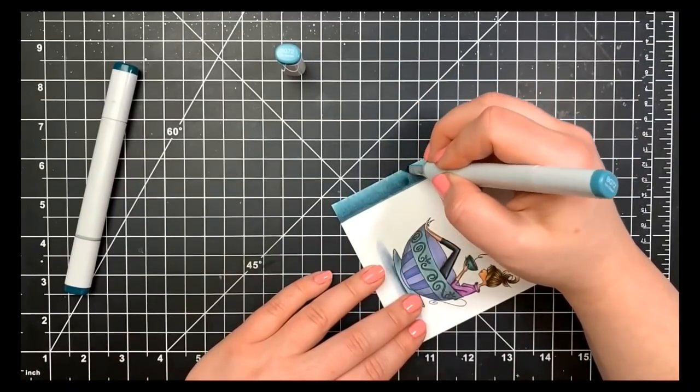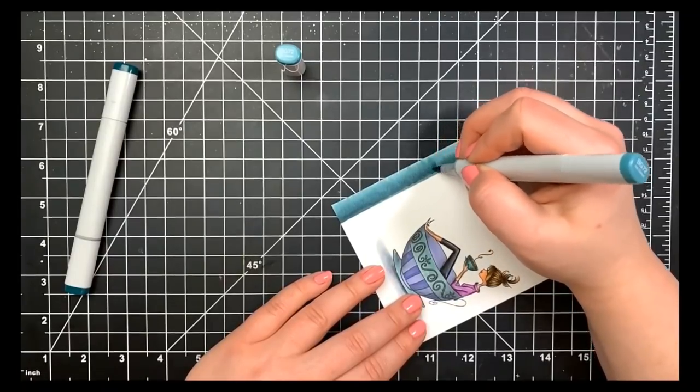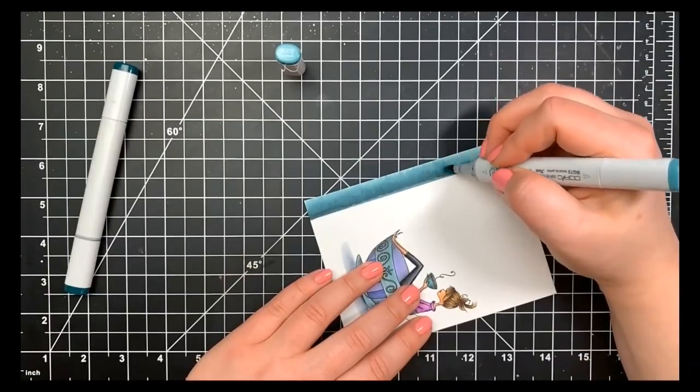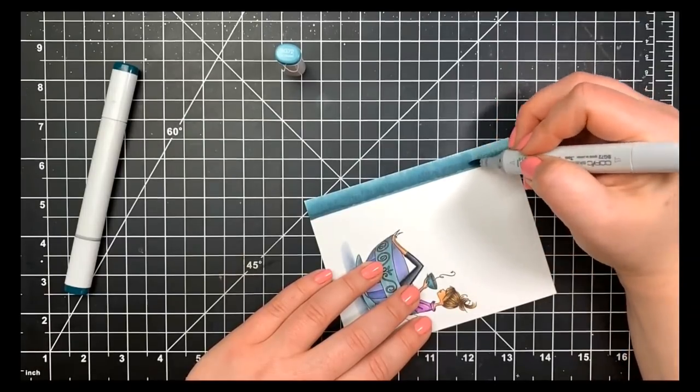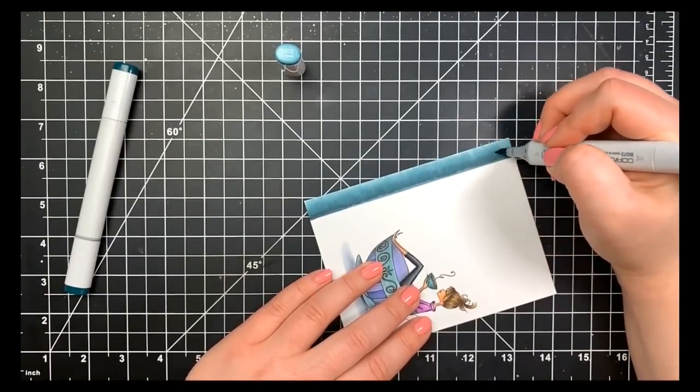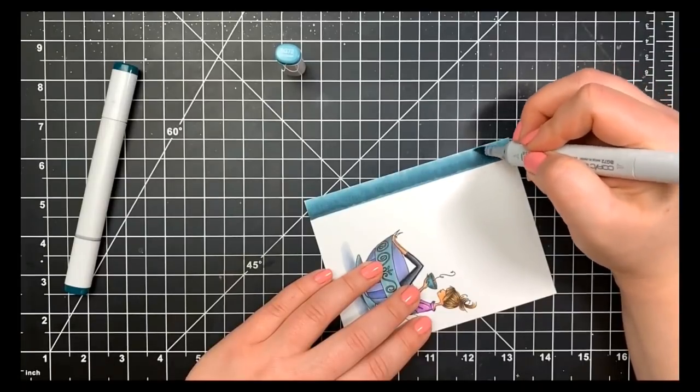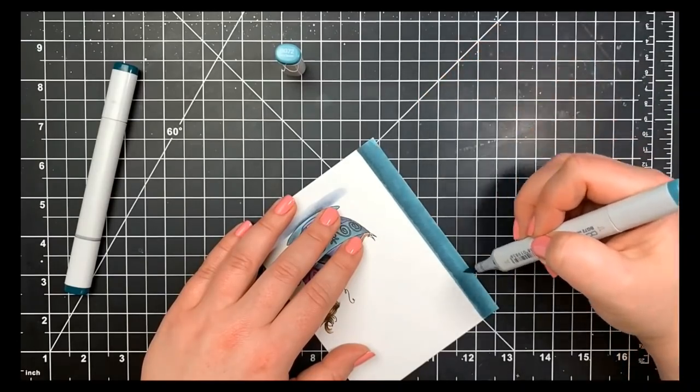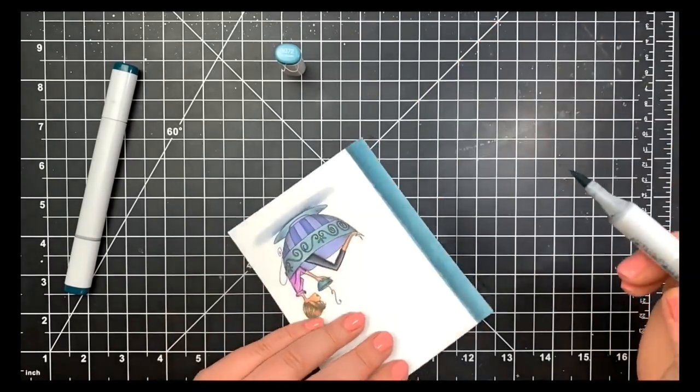And I'm going to go ahead and go in with the BG72 and I'm doing the same thing. I'm starting about midway where my flicks left off for the darkest color and I'm flicking to the edge of the paper. And then I'll go back in and fill in any areas that I maybe didn't flick all the way to the edge or didn't get a perfect blend. You can go over it as many times as you want.